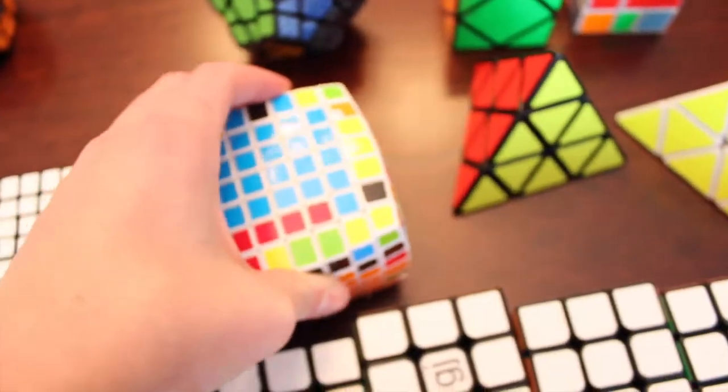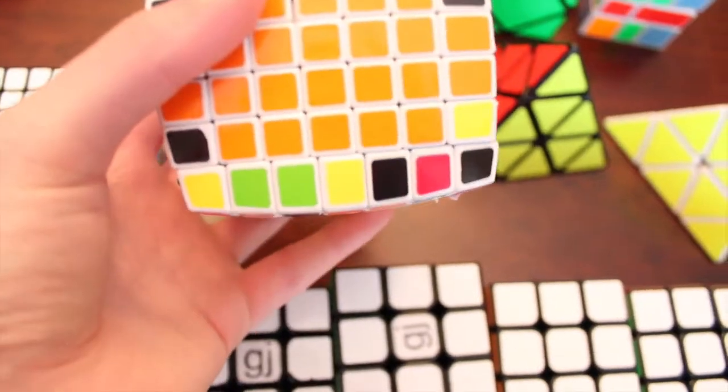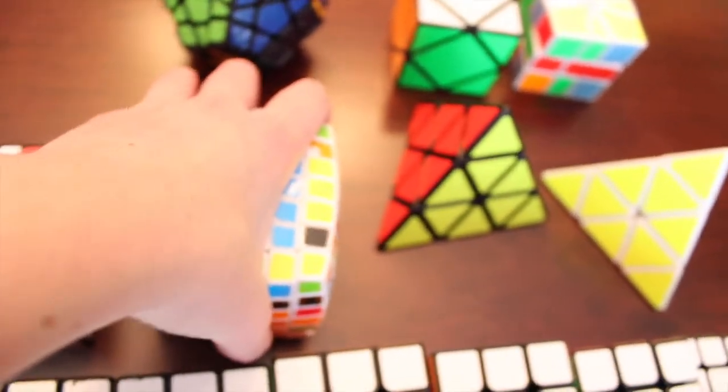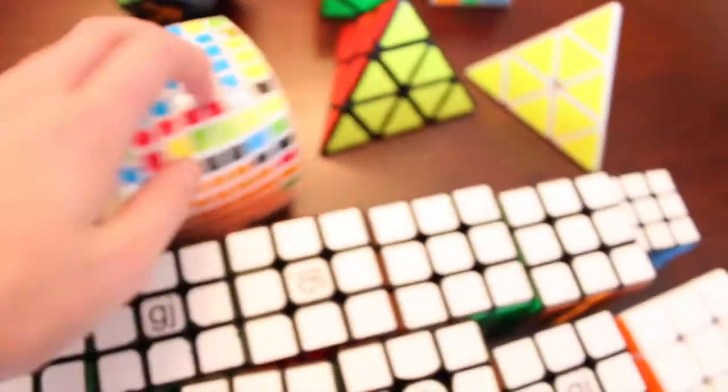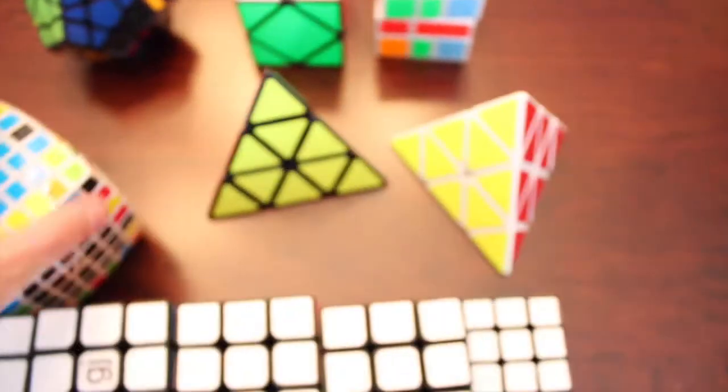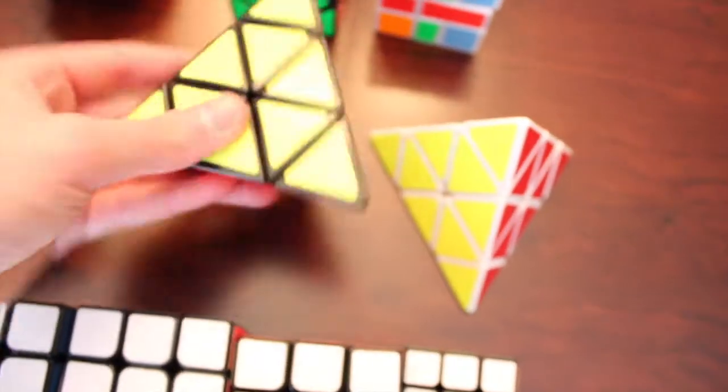And then I have this V Cube 7x7. I think I got this as a birthday gift from my aunt. I think it was, was it this year? I mean last year. Might have been two years ago or a year. I don't know. But yeah, that's the V Cube. It turns horribly because it's V Cube.